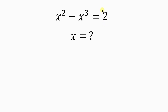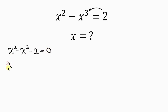Our first step will be to move this 2 to the left-hand side, so that we have x squared minus x cubed. As 2 crosses to the left, it becomes minus 2, giving us x squared minus x cubed minus 2 equals 0. Now negative 2 is the same as negative 1 minus 1, so this is equal to 0.